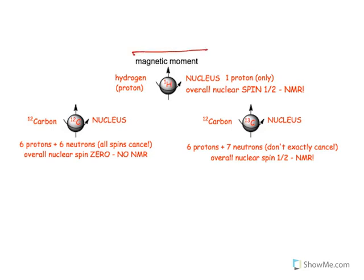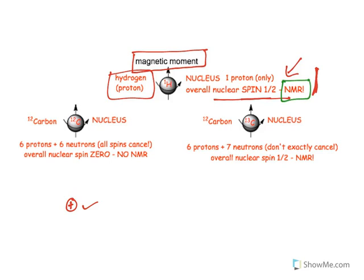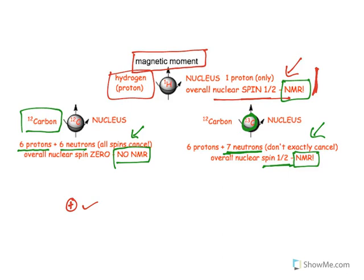The hydrogen atom nucleus has only one proton and no neutron — it is simply a proton. Because it has an odd number, it has a spin quantum number of one-half and exhibits NMR. Carbon-12 has 6 protons and 6 neutrons — all spins cancel, so no magnetic moment and no NMR. Carbon-13, an isotope, has one extra neutron so the spins don't cancel; its spin quantum number is also one-half, so it does show NMR.